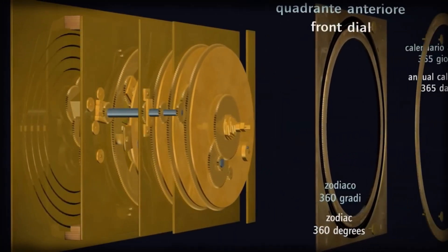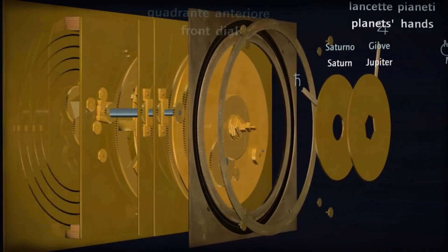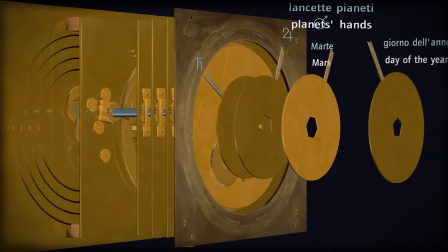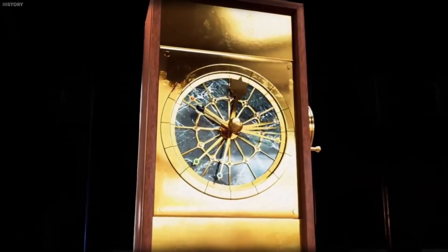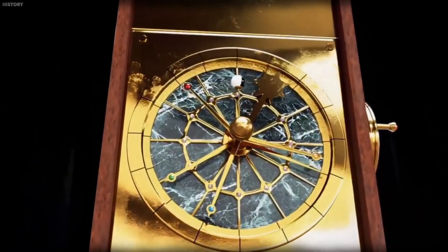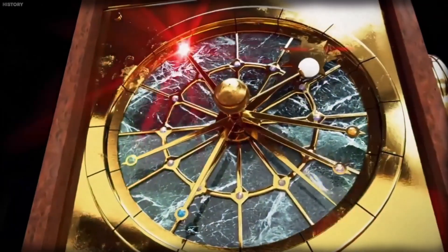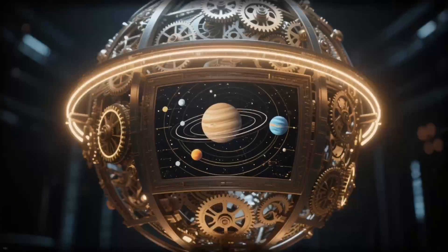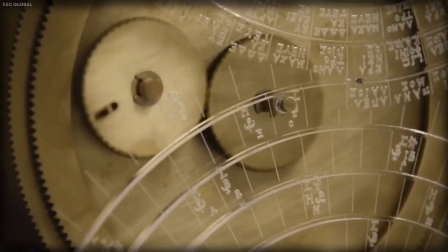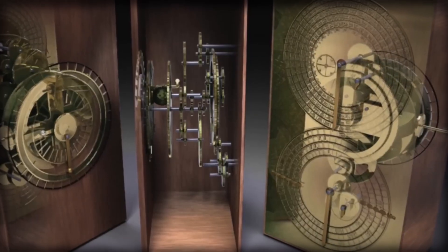Using these recovered details, the team began building a digital model of the missing front. A planetary display that had to fit within the machine's narrow bronze frame. It was called the model of the cosmos. This wasn't imagination. It was engineering. Every gear had to obey the surviving mathematics, fit within millimeters of space, and move without collision.